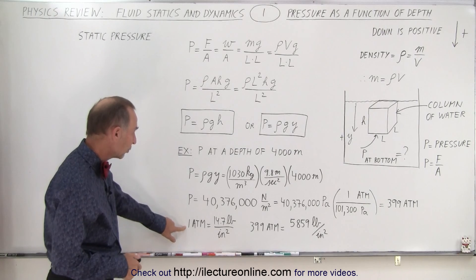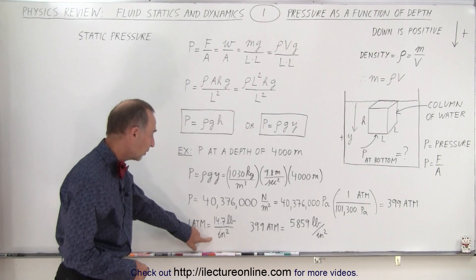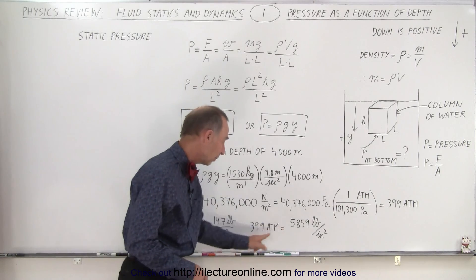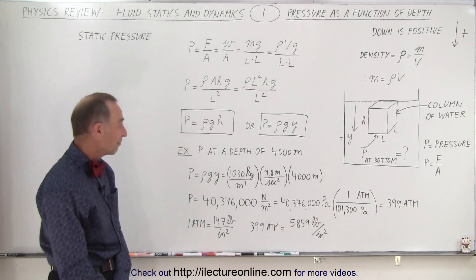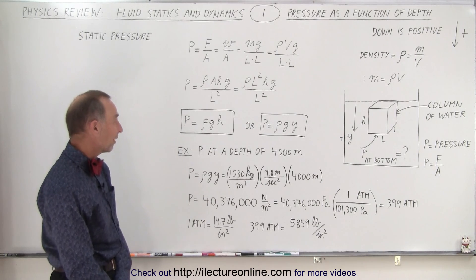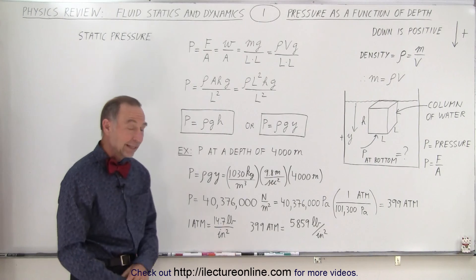Converting to imperial units: one atmosphere is 14.7 pounds per square inch. When we convert, we multiply by 14.7 and get 5,859 pounds per square inch. That's quite a bit.